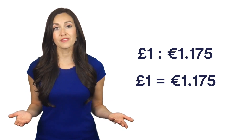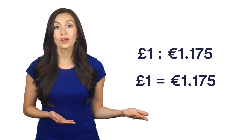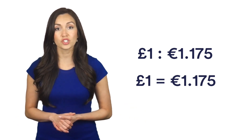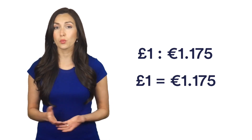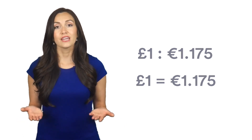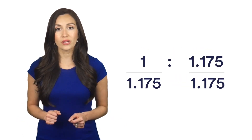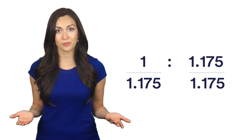When applying mathematics to one side of a ratio, the same must be done to the other. So if we wanted to find out how many pounds we could exchange for 1 euro, we need to do a calculation that changes this ratio to one that looks like this. If you divide any number by itself, you will always be left with 1, which is what we are trying to turn 1.175 into.